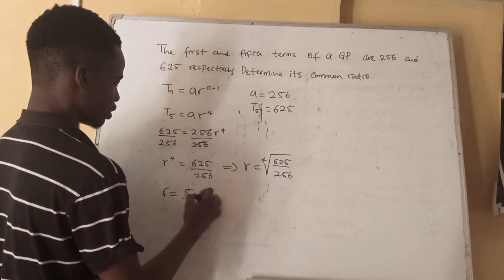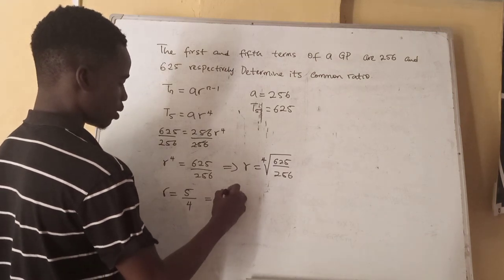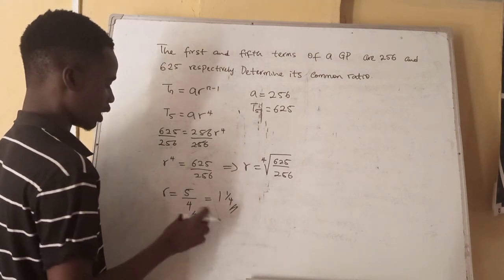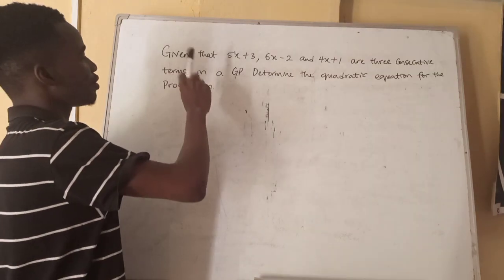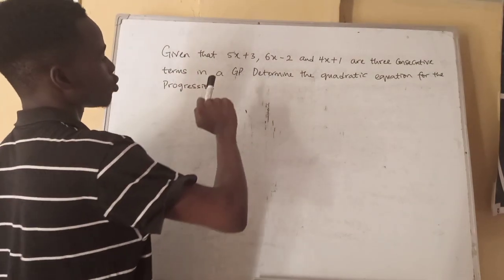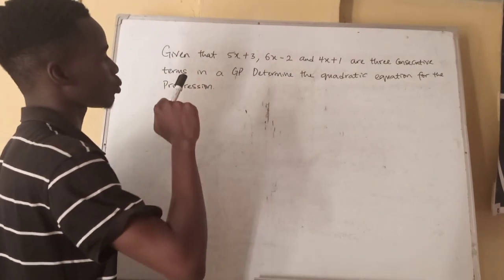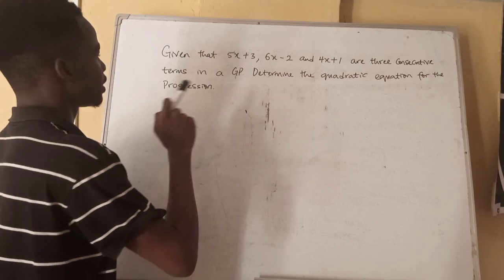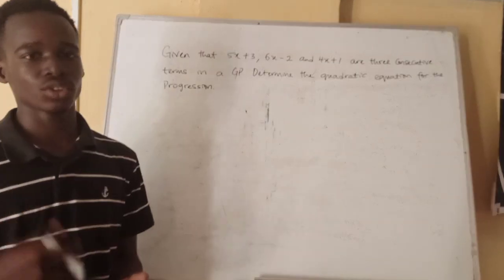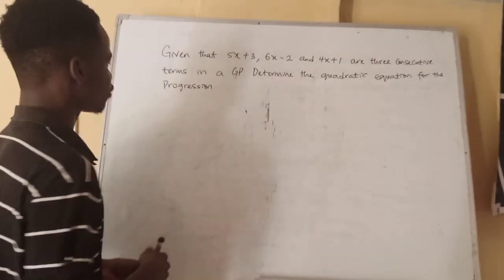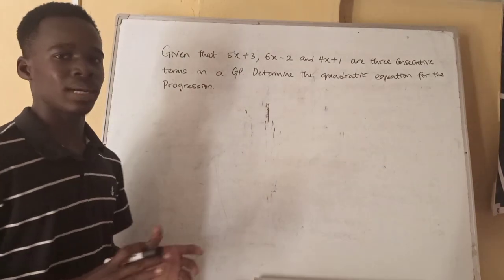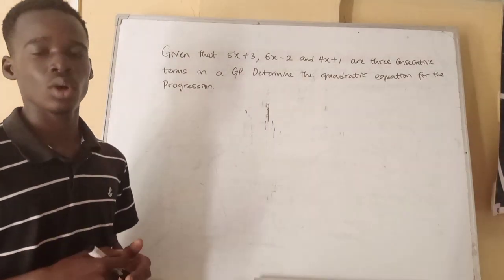So our common ratio R is equal to 5 over 4. Either of these is our answer. Given that 5x plus 3, 6x minus 2, and 4x plus 1 are three consecutive terms in a GP, determine the quadratic equation for the progression. This is a very simple question but we have to bear in mind how to find the common ratio.